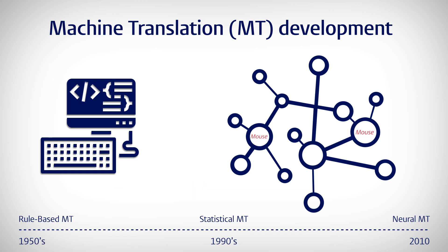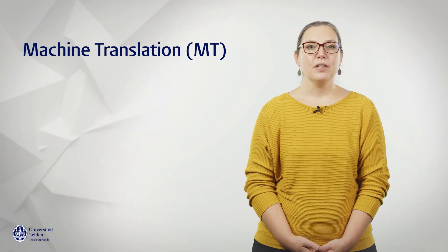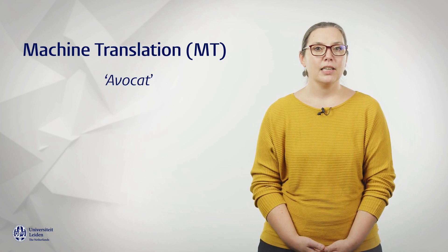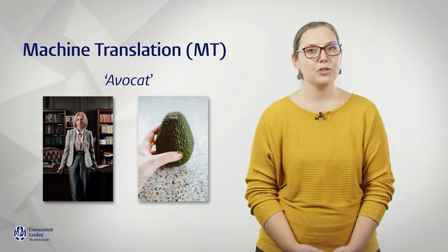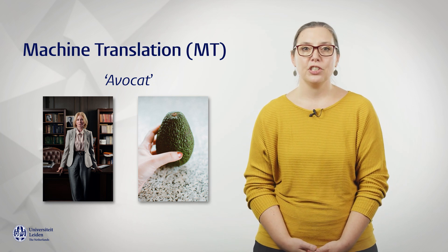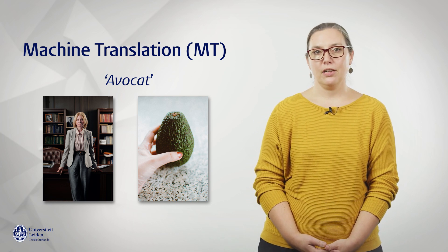For instance, the word 'mouse' can refer to the animal, but also to the device you use to position the cursor on your computer screen. In the animal sense, 'mouse' will appear close to words such as rodent, tail, cheese, and cat, while the computer sense of 'mouse' will appear close to words such as computer, keyboard, typing, and cursor. It's very important to realize that neural machine translation needs context to predict which word, and therefore which translation, you need. For example, in French the word 'avocat' can mean either a lawyer or an avocado. But without the right context, the machine is just as likely to produce the translation 'you need a lawyer' as 'you need an avocado.' The machine simply cannot tell the two apart.